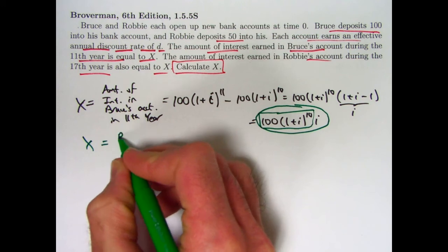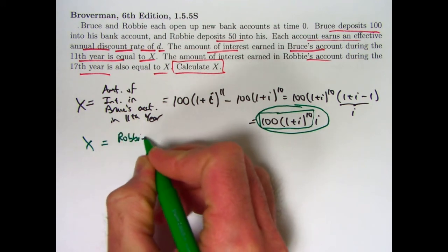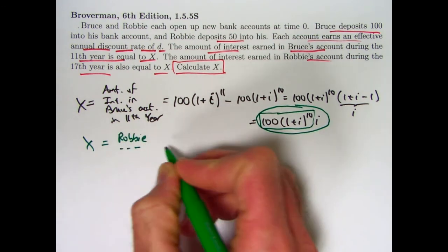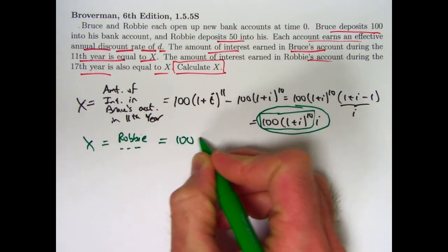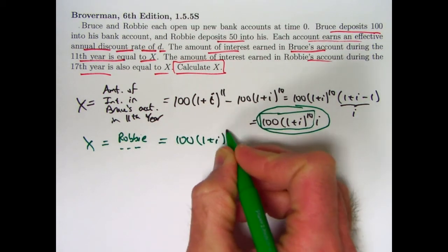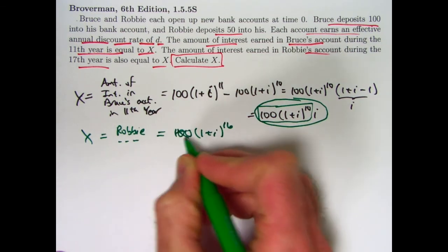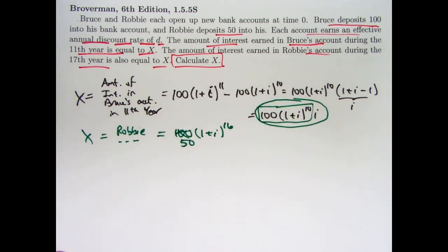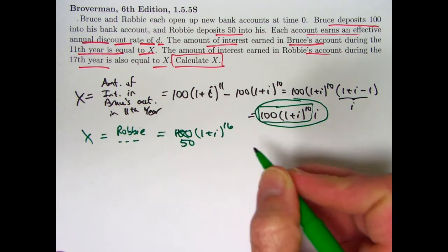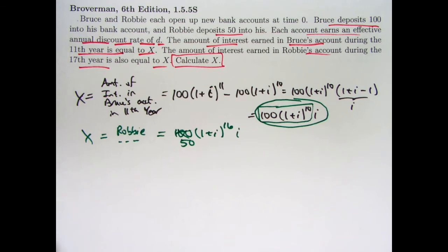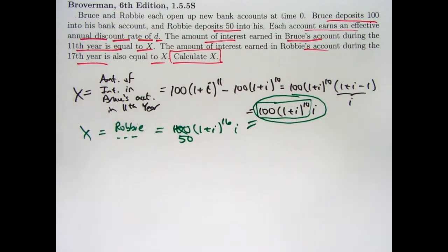Same thing for Robbie during the 17th year. I won't bother writing 17th year. 100 times 1 plus i to the 16th is how much money Robbie has, excuse me, sorry. 50 times 1 plus i to the 16th is how much money Robbie has in the account at the beginning of the 17th year. Multiplying that by i will give the amount of interest earned during the 17th year.